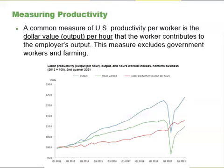Productivity growth is also closely linked to the average level of wages. Over time, the amount that firms are willing to pay workers will depend on the value of the output those workers produce. If a few employers try to pay their workers less than what those workers produced, then those workers would receive offers of higher wages from other profit-seeking employers. If a few employers mistakenly paid their workers more than what those workers produced, those employers would soon end up with losses. In the long run, productivity per hour is the most important determinant of the average wage level in any economy.